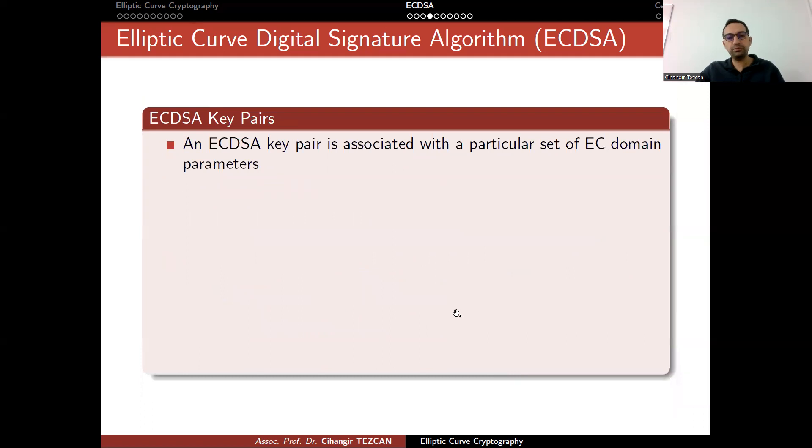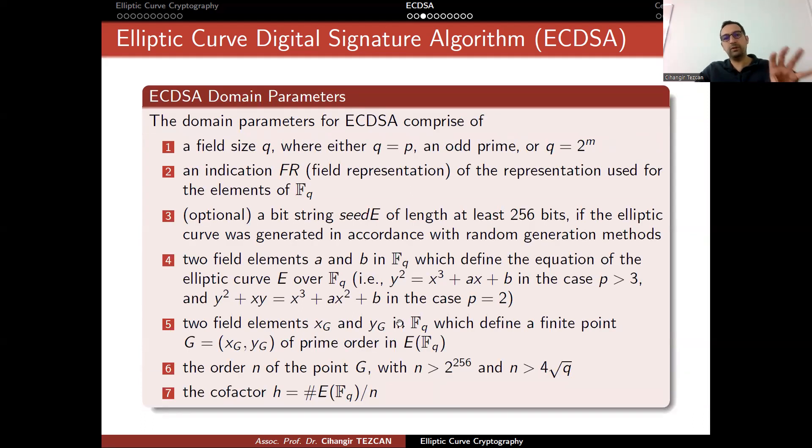These are domain parameters, so you define it before. I showed you how it is the case for Bitcoin or Ethereum. Once you have these domain parameters, now you can generate your keys and start signing messages.